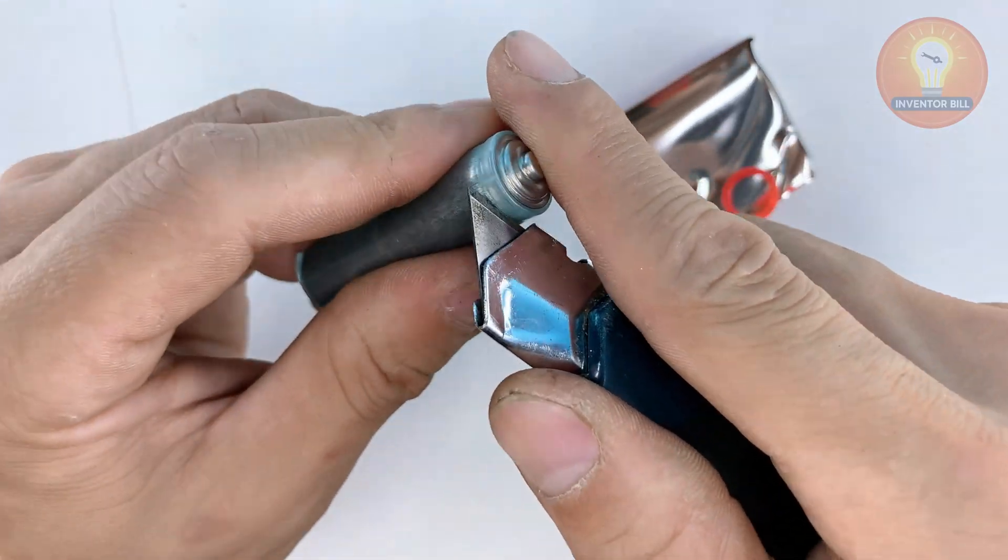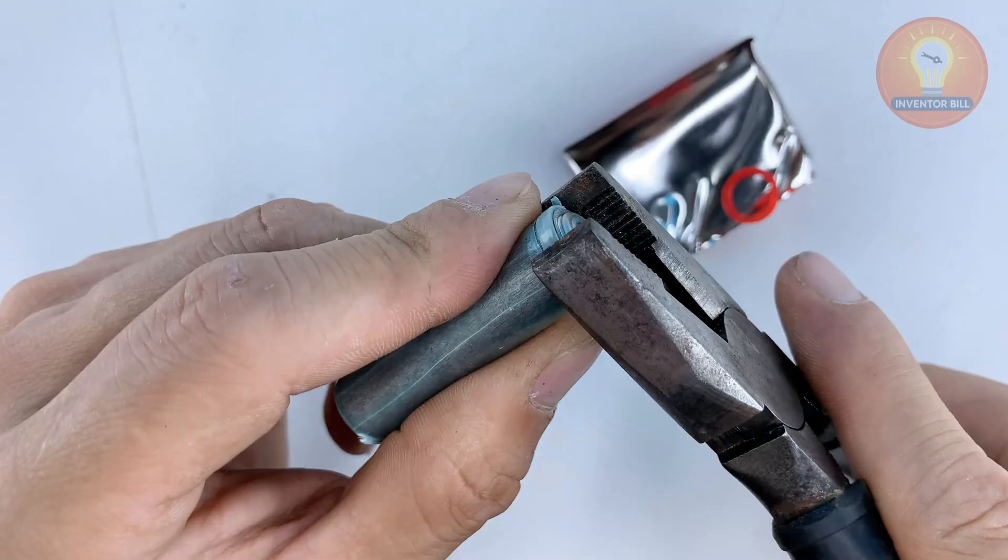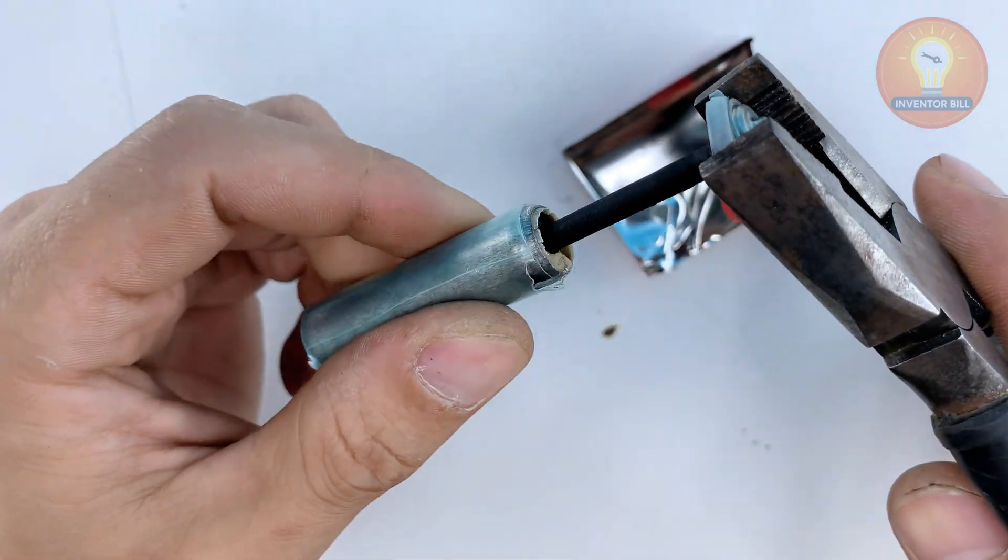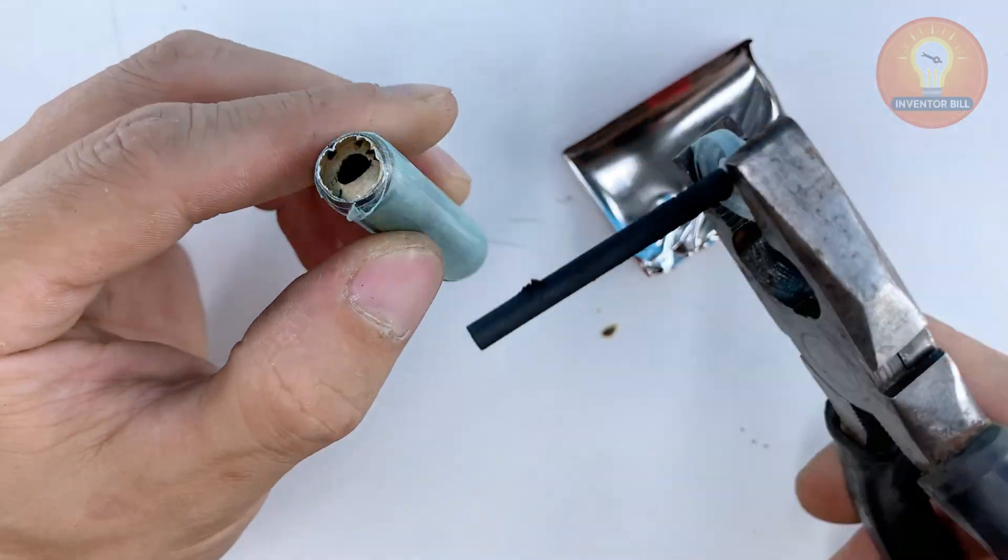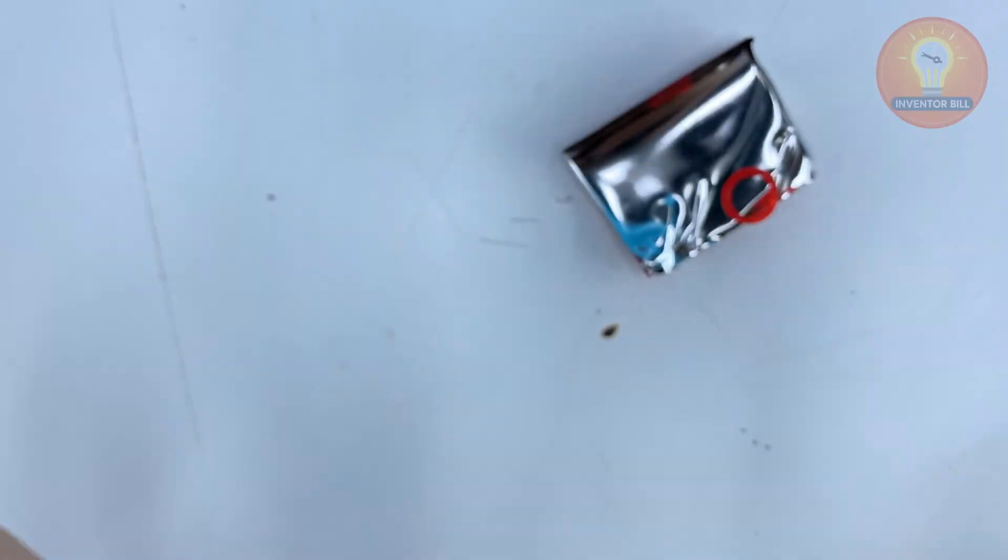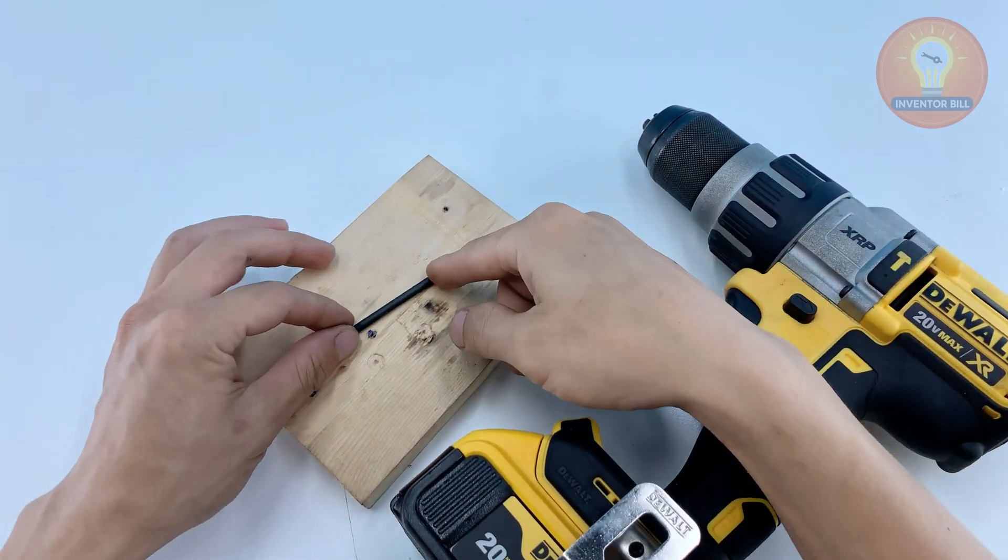Inside you'll find the graphite core. Pull that core out carefully because this is what will heat up and let you melt metal. It's simple material but it works extremely well once we shape it and connect it to our tool.